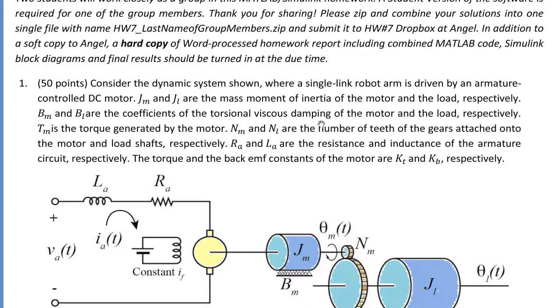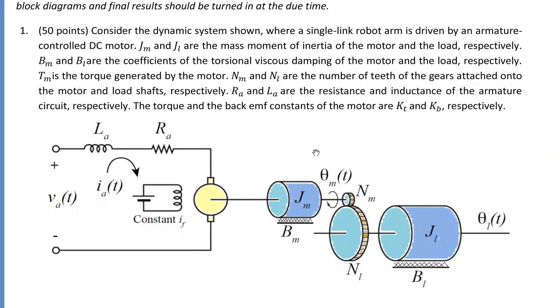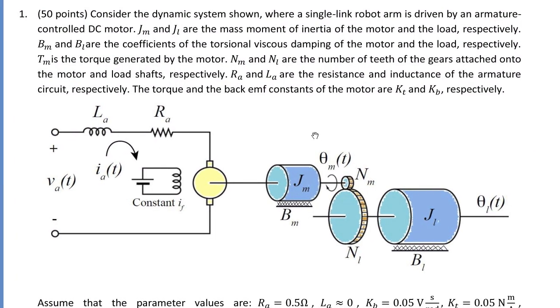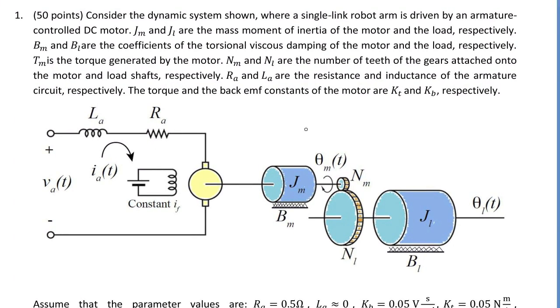Hello, I am providing solution to homework number 7, problem number 1. You are asked to study dynamic behavior of a single link robot arm which is driven by an armature controlled DC motor.